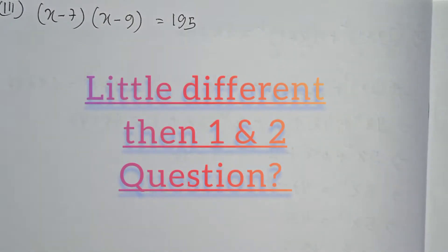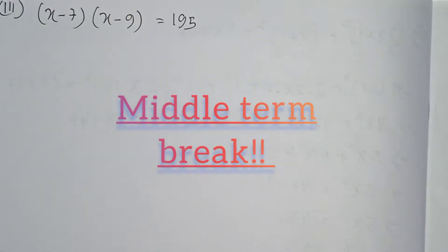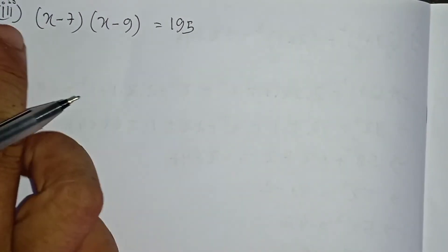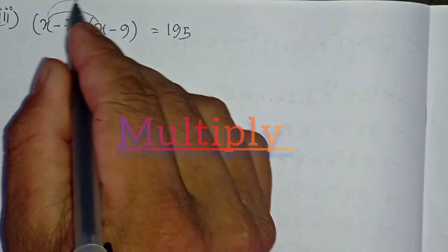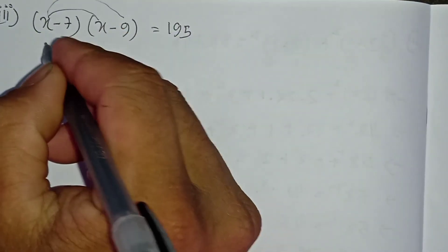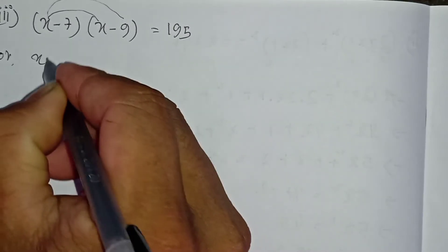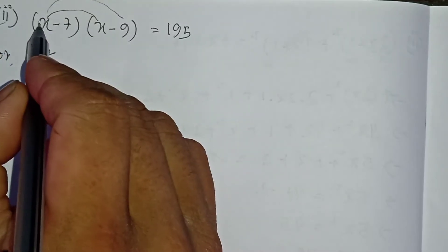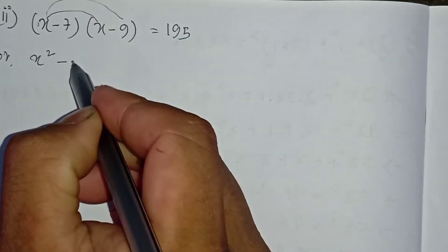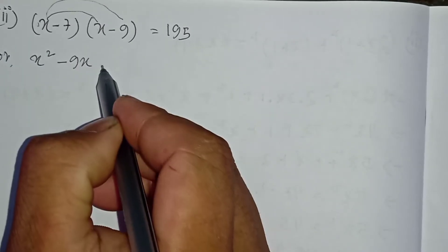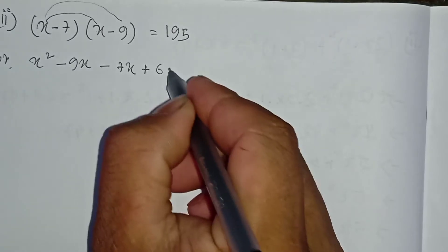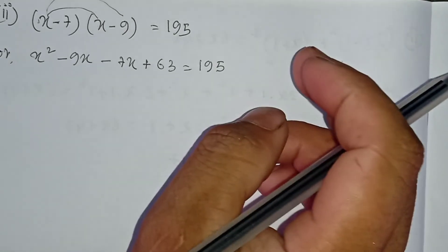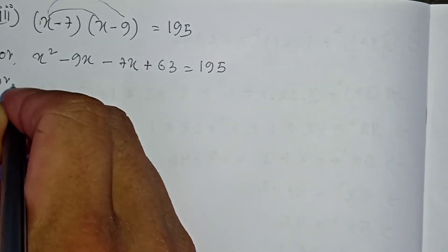The third question — let's look at question 3. The key here is middle-term break. For this question we also use middle-term break method. I need to multiply whatever — except nine — like video sign of one. So x into x is x squared — in the wrong, you're placing already lost — plus into minus, minus into x into nine, nine x. Rather than that, minus into plus, minus into 7 times x is 7x. Minus into minus gives plus: seven times nine is 63. Equals 195.